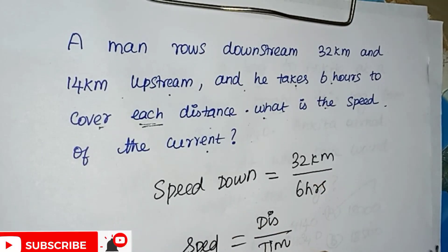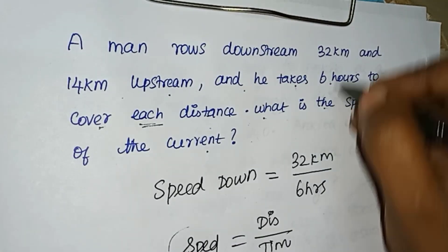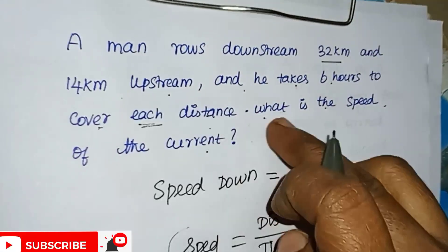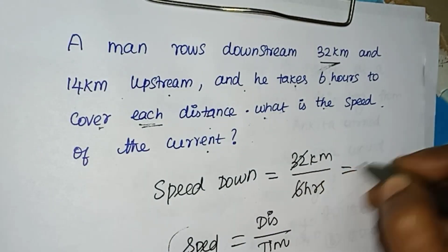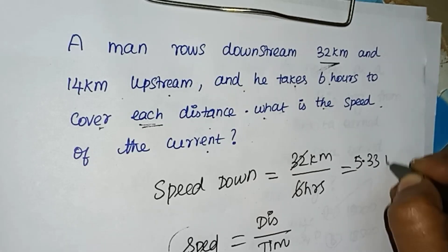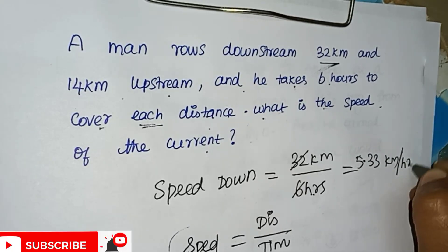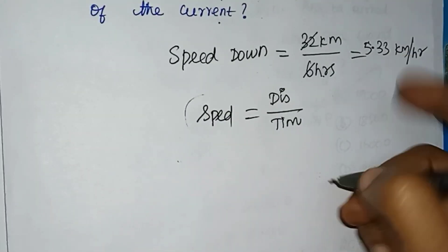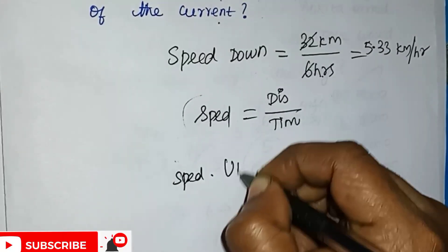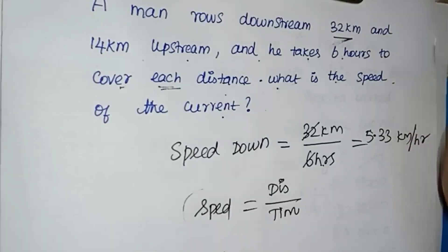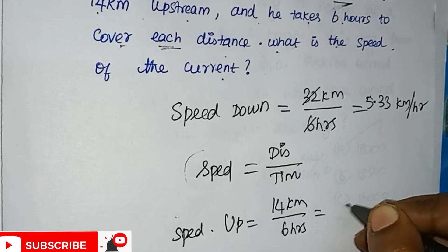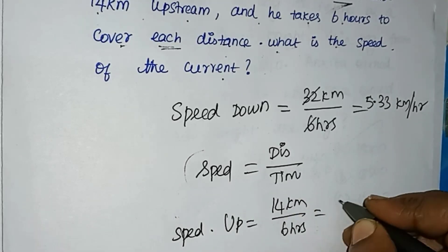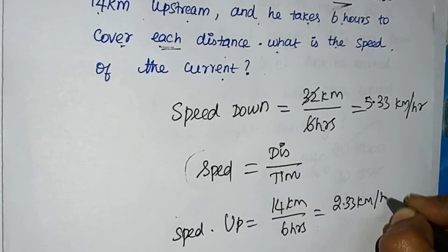Speed equals distance divided by time. Distance is 32 km and time is 6 hours. Downstream speed works out to 5.33 km per hour. For upstream, time is 14 km divided by 6 hours, giving a speed of the current as approximately 2.33 km per hour.